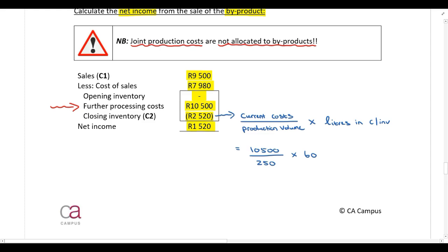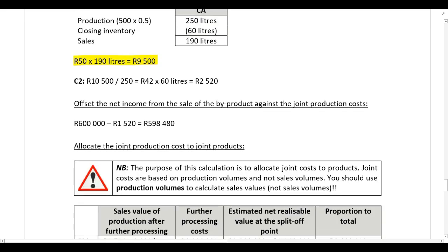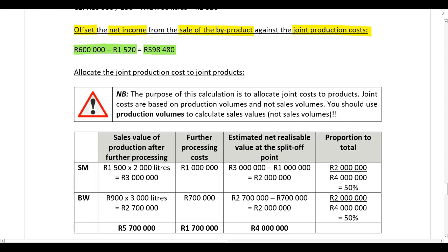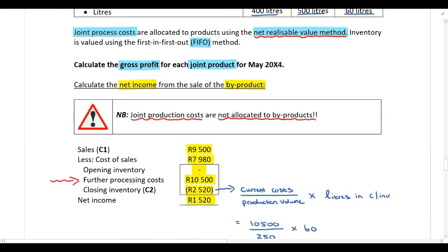The reason we performed this calculation is that the net income from the sale of the byproduct must be offset against the joint production costs. We take the joint production costs of 600,000 Rand and offset the net income from the sale of the byproduct. The resulting amount is then allocated to our joint products using the net realizable value method as specified in the question.